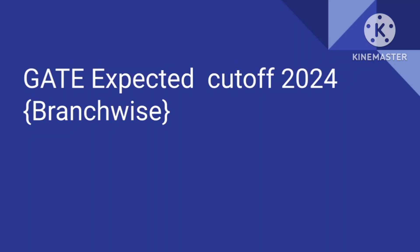For computer science and engineering, the cutoff for general category is around 27, for OBC category the cutoff is around 22.5, and for SC and ST category the cutoff is around 16.67 approximately.